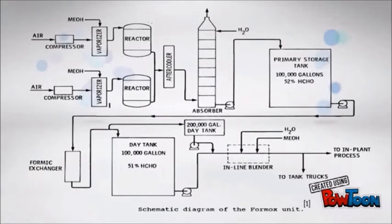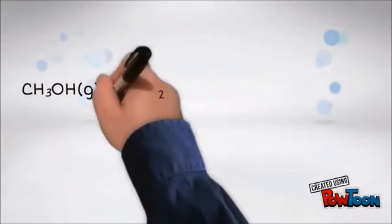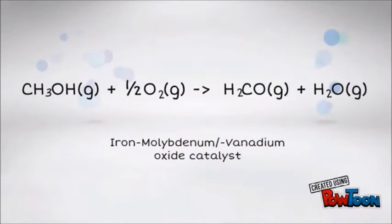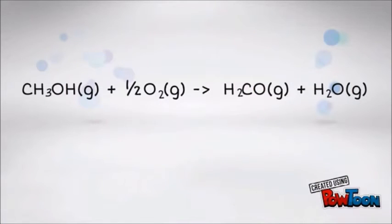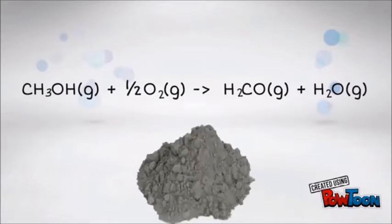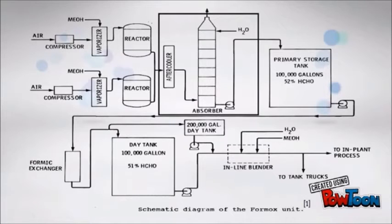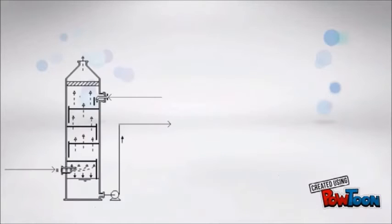Second, the reaction: inside the heat exchange reactor, oxidation of methanol occurs when the feed gas is passed through the iron-molybdenum and/or vanadium oxide catalyst-filled tubes. Silver catalyst is an alternative.